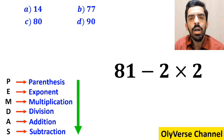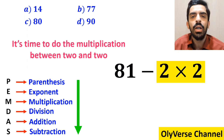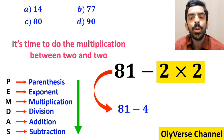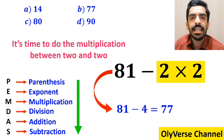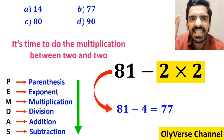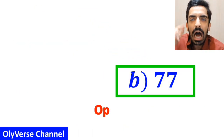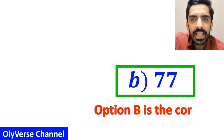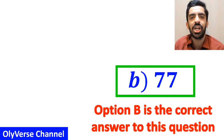Now we do the multiplication between 2 and 2, which gives us 81 minus 4. Finally, the value of this expression is equal to 77. Therefore, option B is the correct answer to this question.